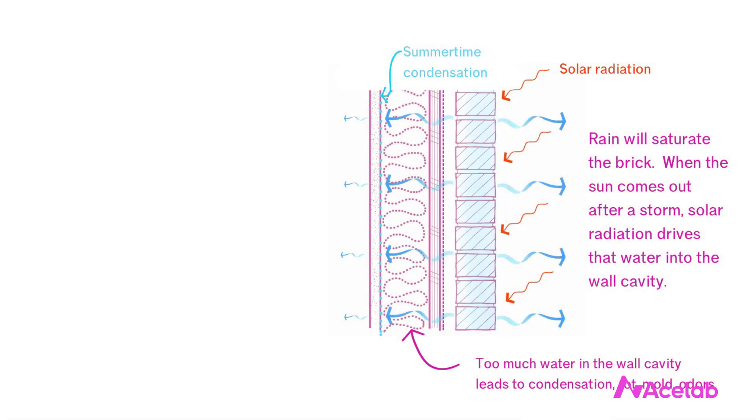This drying space is especially helpful in mitigating solar vapor drive when we use a reservoir cladding in a rainy climate. Reservoir claddings are claddings that hold a lot of water, such as brick, stucco, adhered stone, and unpainted cedar shakes. What happens with solar vapor drive is that after rain saturates the cladding — say brick — the sun comes out and shines on that wet brick, causing it to dry in both directions. Water vapor is driven into the wall behind the brick and can overwhelm the wall's capacity to store and redistribute water, causing rot, mold, and odors.